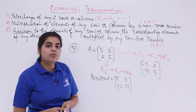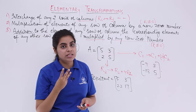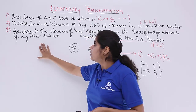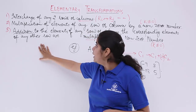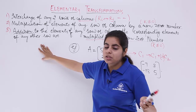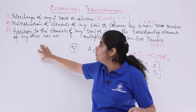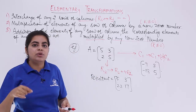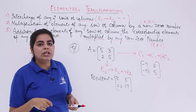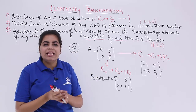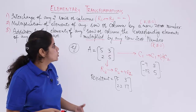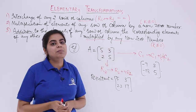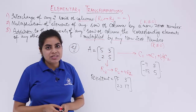In this video, we saw three elementary transformations: first, interchange of any two rows or columns; second, multiplication of elements of a particular row or column by a non-zero number; and third, addition combined with multiplication — adding to a row or column the corresponding elements of another row or column multiplied by a non-zero number.